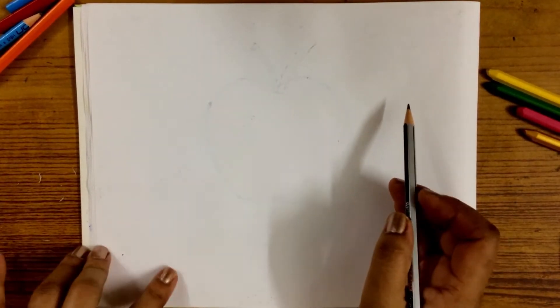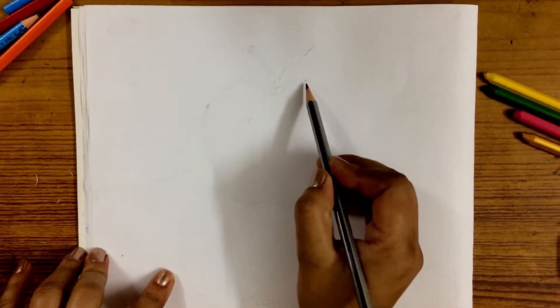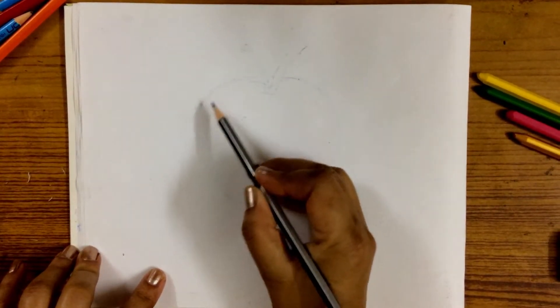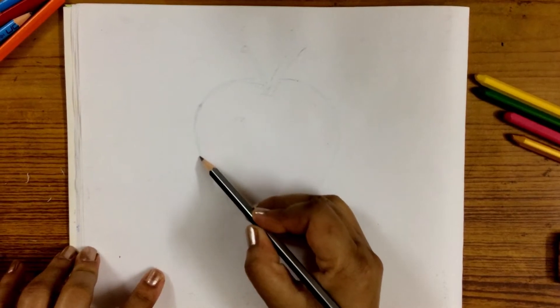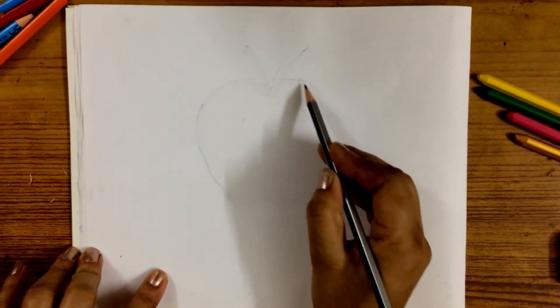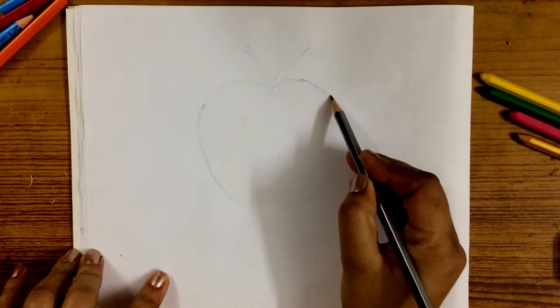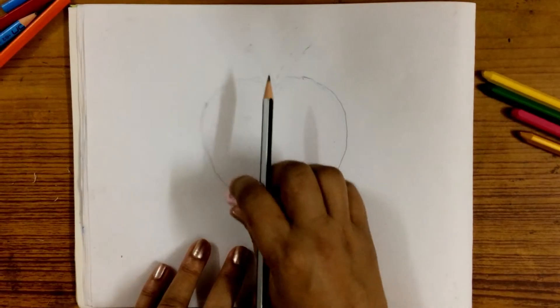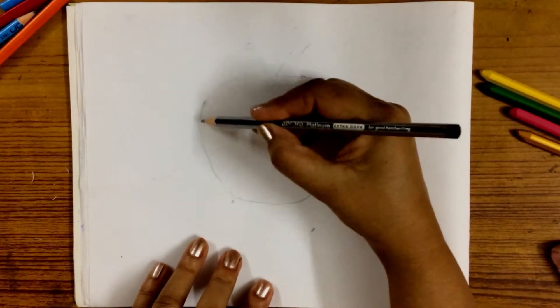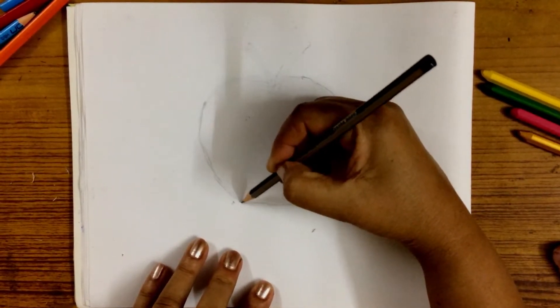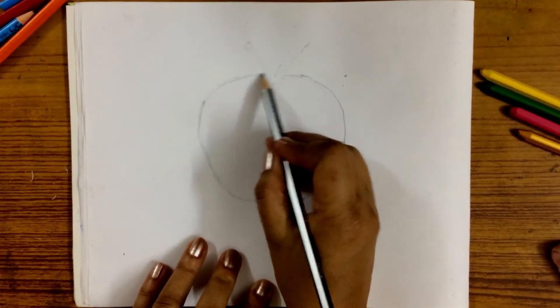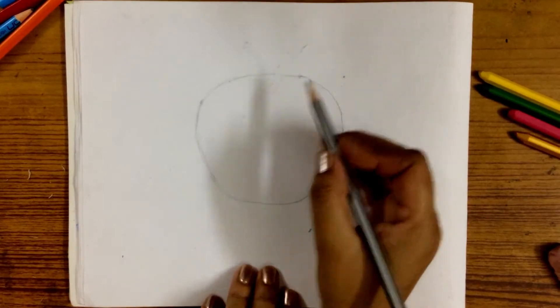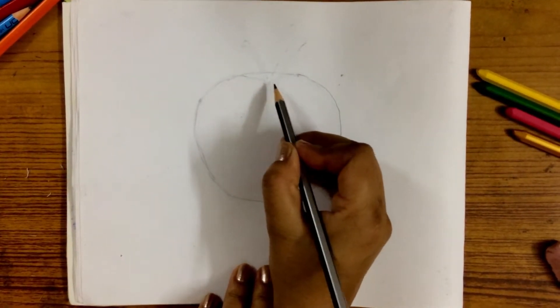First of all children, we will start by drawing a circle. Now we will draw a wide U-shaped line at the bottom.